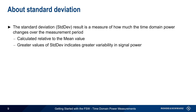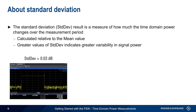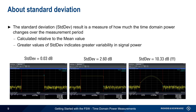Greater values of standard deviation indicate greater variability in signal power. For example, a pulsed signal with a relatively constant power over the measured interval will have a very low standard deviation. Small amplitude variations, or ripple, in the pulse will increase the measured standard deviation. And if there are substantial changes in amplitude over the duration of the pulse, the standard deviation may be quite high.